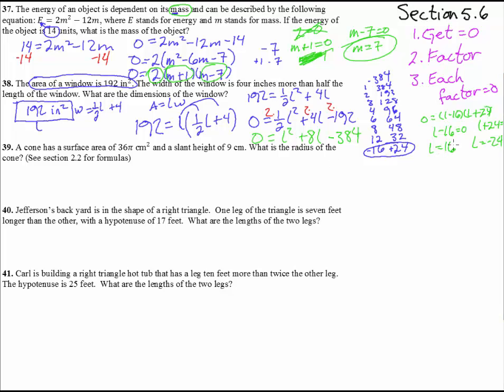Okay. So the length of the window is either 16 inches or negative 24. And at some point, your grounding in reality should tell you, we can't have negative 24 inches. So we get the length is 16 inches. And then the width would be half the length, which is 8 plus 4, is 12 inches. So the width is 12 inches and the length is 16 inches. 16 times 12 is indeed 192 inches squared.